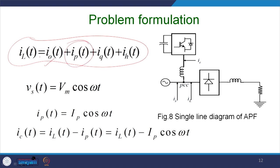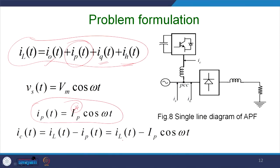IP is the in-phase component of the current with the voltage, and IQ is the quadrature-axis current. All harmonic currents are represented by this. We shall see that Vs = Vm cos(ωt), so we expect that the in-phase component Ip = Ip cos(ωt). The compensating current Ic will be IL minus Ip, so you require to calculate this entity very accurately by the reference generation technique, and thus you get the compensating current: Ic = IL minus Ip cos(ωt).